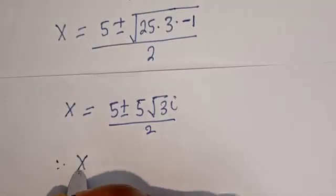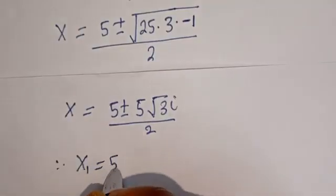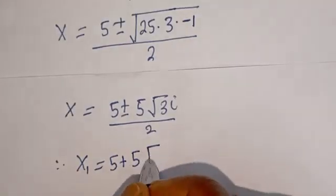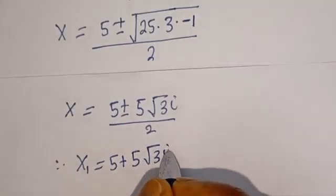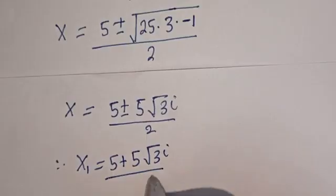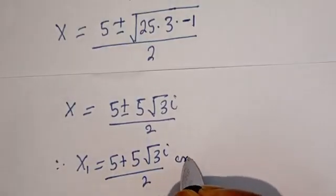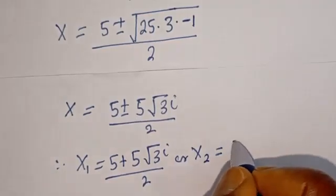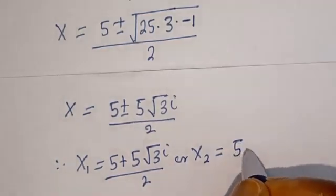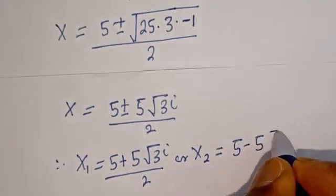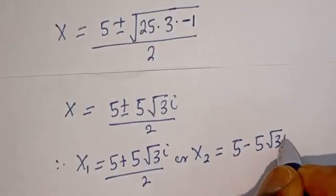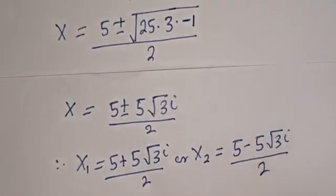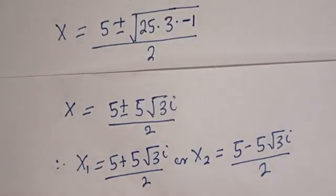Therefore, x1 is equal to 5 plus 5i√3, divided by 2. Or x2 is equal to 5 minus 5i√3, divided by 2. We've gotten the values of x1 and x2.